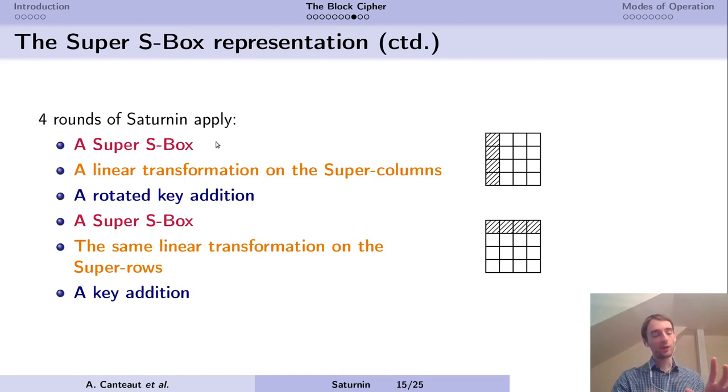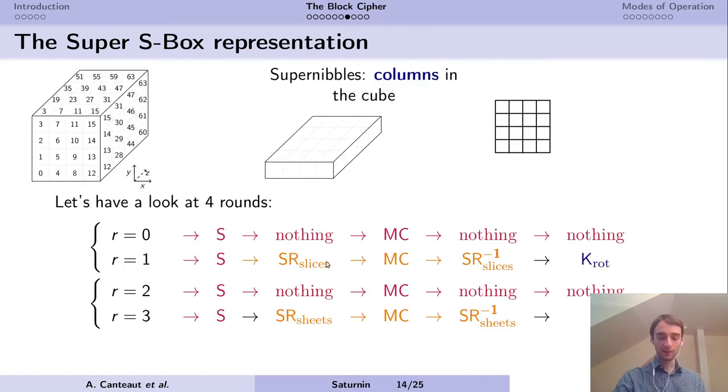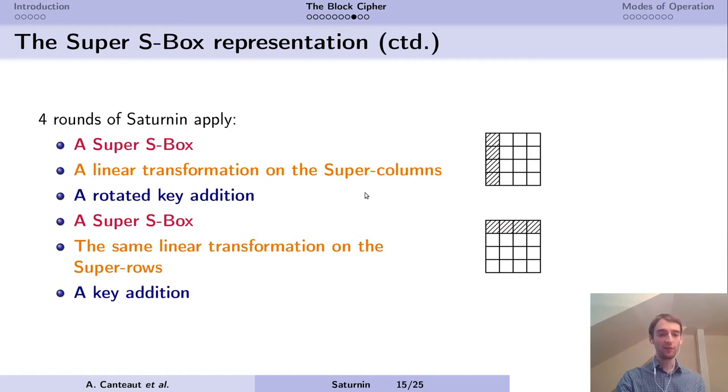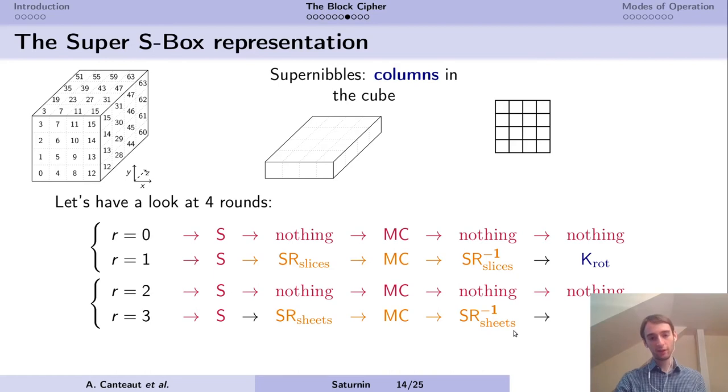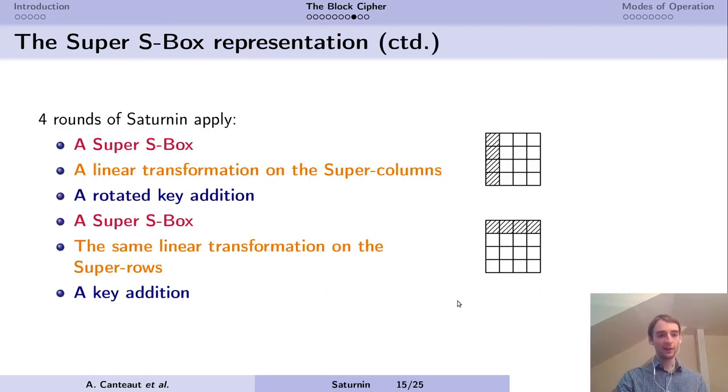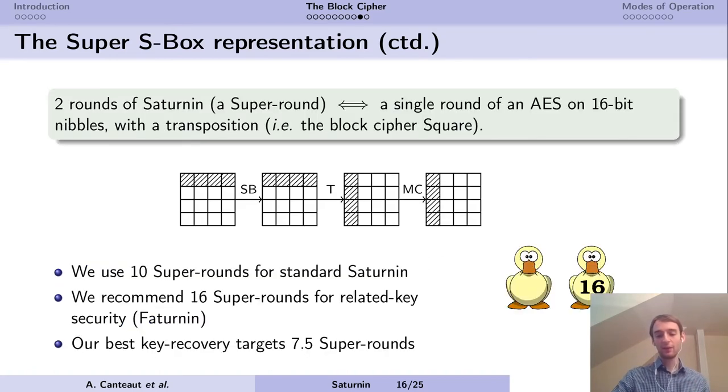This corresponds to a sequence of operations performed on this equivalent state, where the nibbles correspond to columns in the cube. There is a Super S-Box which applies to the columns: S-Box, mixed column, S-Box. There is a linear transformation on the super columns in the cube, which means slices, mixed column, slices. There is a key addition, a rotated key addition. There is another Super S-Box, and then the same linear transformation but on the super rows, because we are now transforming in the sheets of the cube. Then there is a key addition.